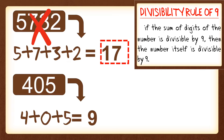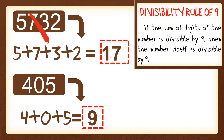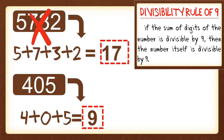To determine if 9 is divisible by or a multiple of 9 — it's 9, so it is divisible by 9, it is a multiple of 9. So 405 is also divisible by 9.